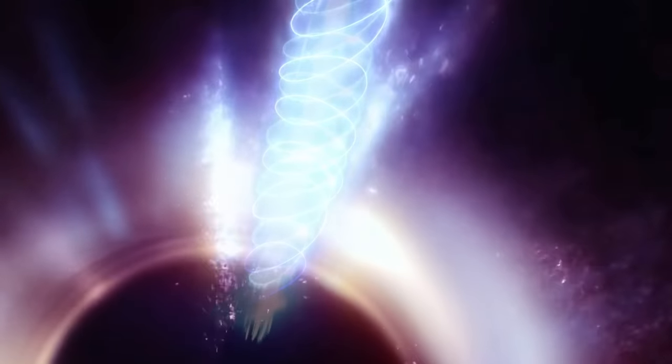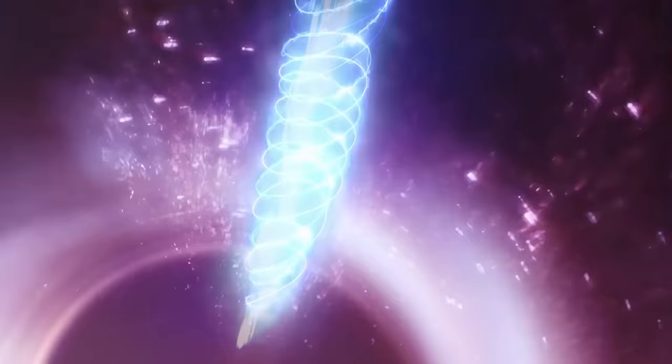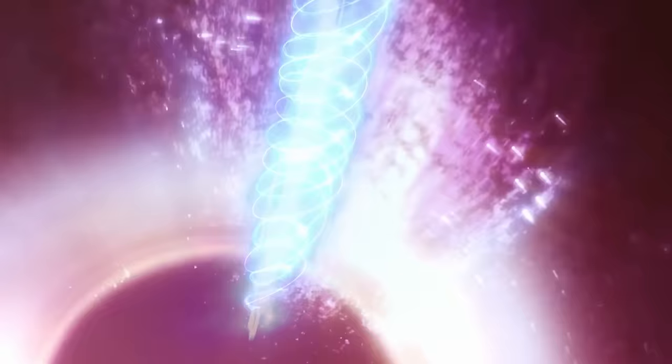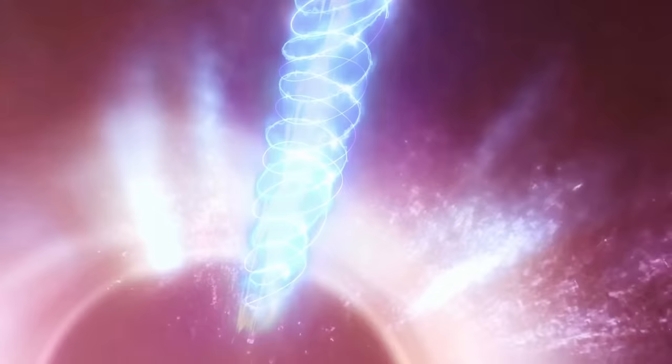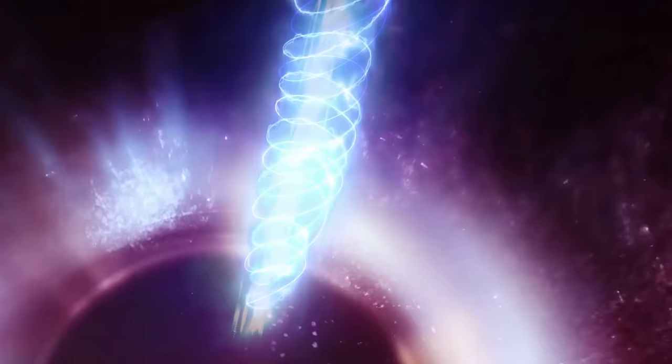This means that the easiest path of escape for any of the charged particles being ejected from the hypernova is along a narrow beam at the poles of the rotation, since the magnetic field can't get as tangled in that direction.